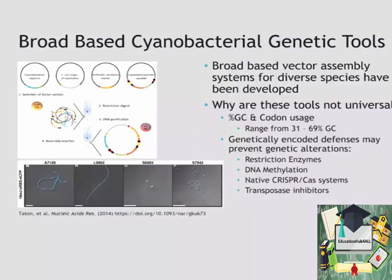We've demonstrated that by producing systems that have cyanobacterial replicating elements, creating plasmids that can go into quite a number of different diverse species, as shown on the bottom, where a plasmid is introduced to express CFP in four very different cyanobacterial species.